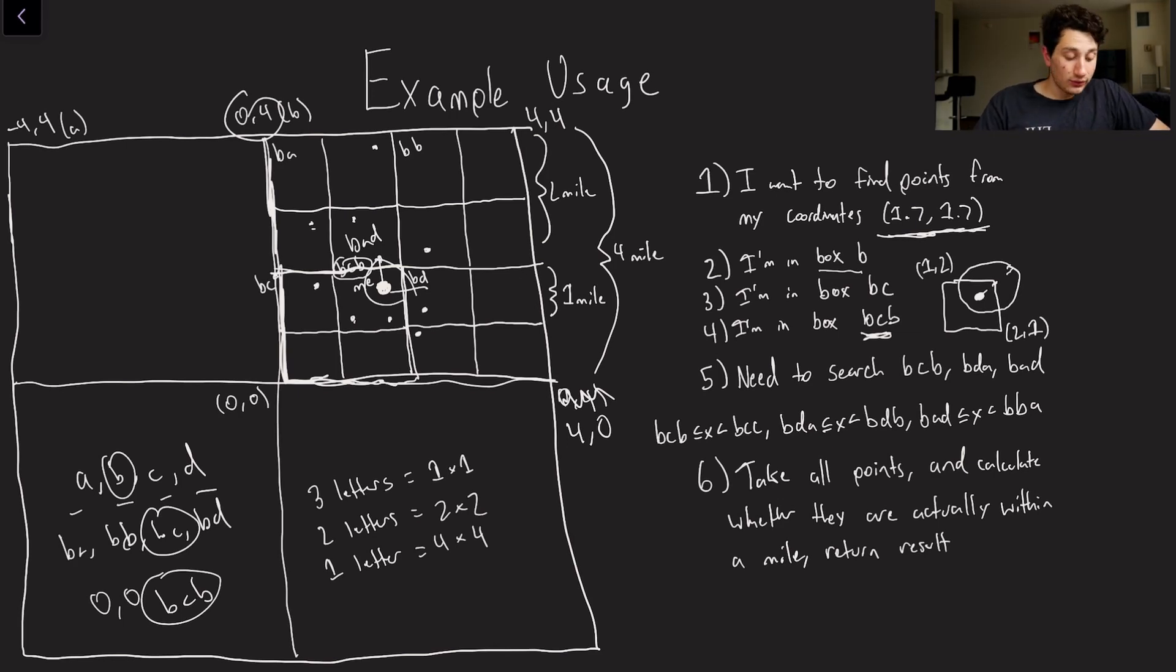And so now we know that we need to search for all of the points in those three boxes. And then once we have them, we can filter that down a little bit and make sure that all of the points that we get back are within one mile. So like I said, in step six, we take all the points and then calculate whether they're actually within a mile, and then we return the result.